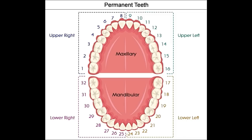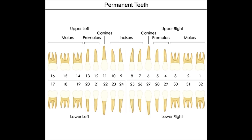Universal numbering for primary or deciduous teeth: there are a total of twenty primary teeth. In the original system, these were numbered 1 to 20, with a small letter 'd' following each number to suggest that the teeth are deciduous or primary. These days, dentists use another version of the universal numbering system for children. Instead of numbering the teeth, each tooth is assigned a letter. Children's teeth are assigned uppercase letters from A through T.